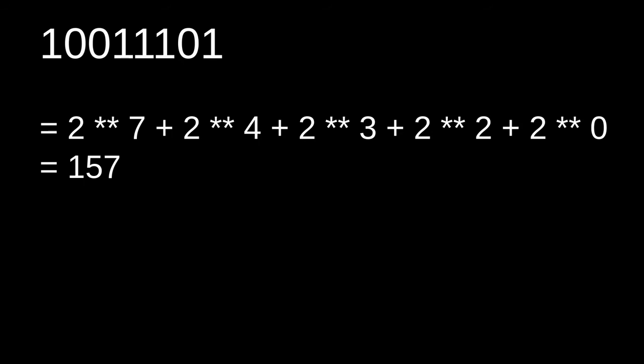That was an example of how to convert binary representation into decimal values. Keep this in mind as we talk about hexadecimal values — the way we convert hexadecimal representation will be similar to how we converted binary into decimal values.